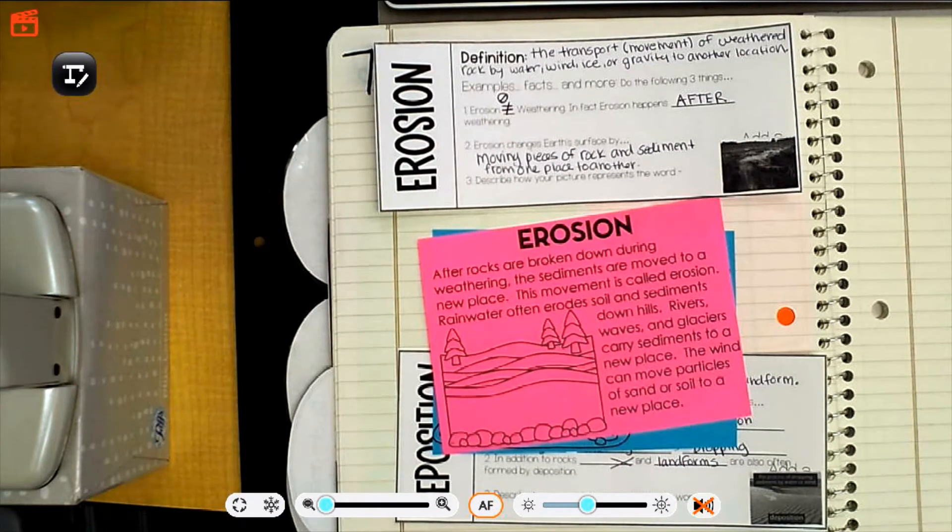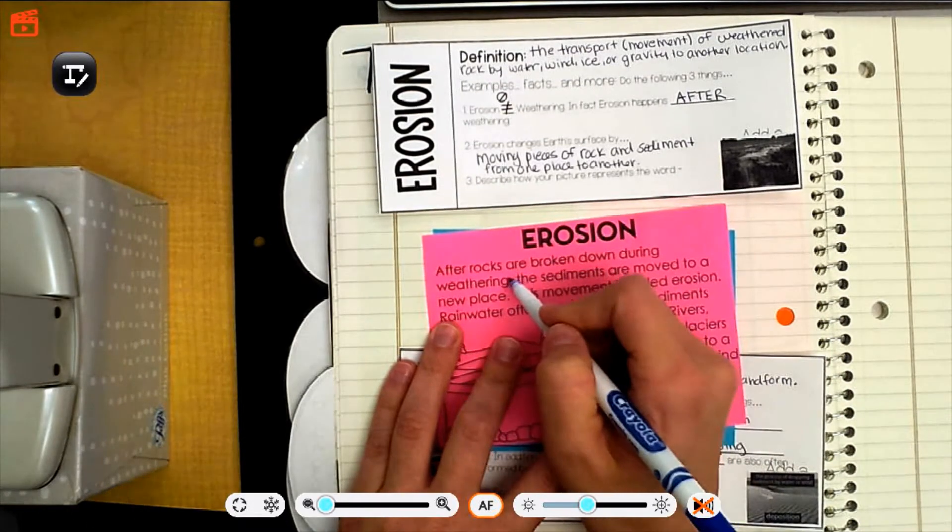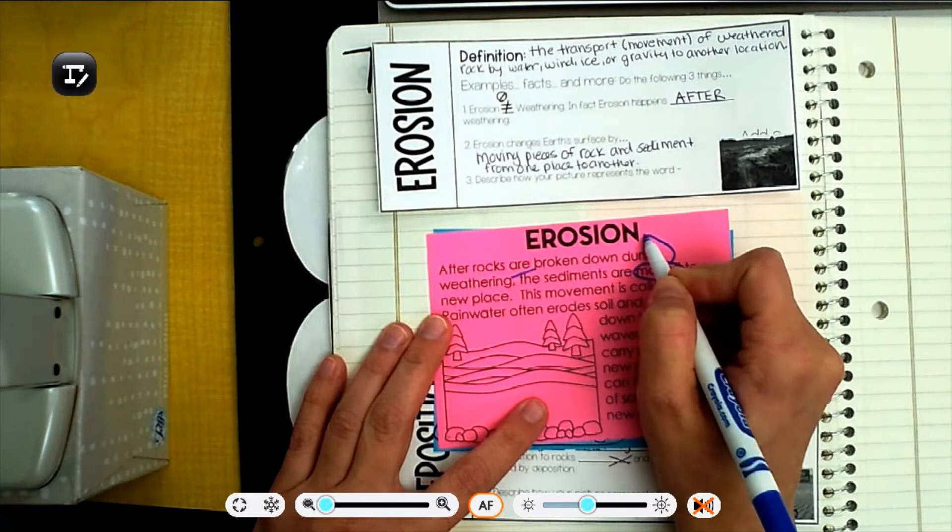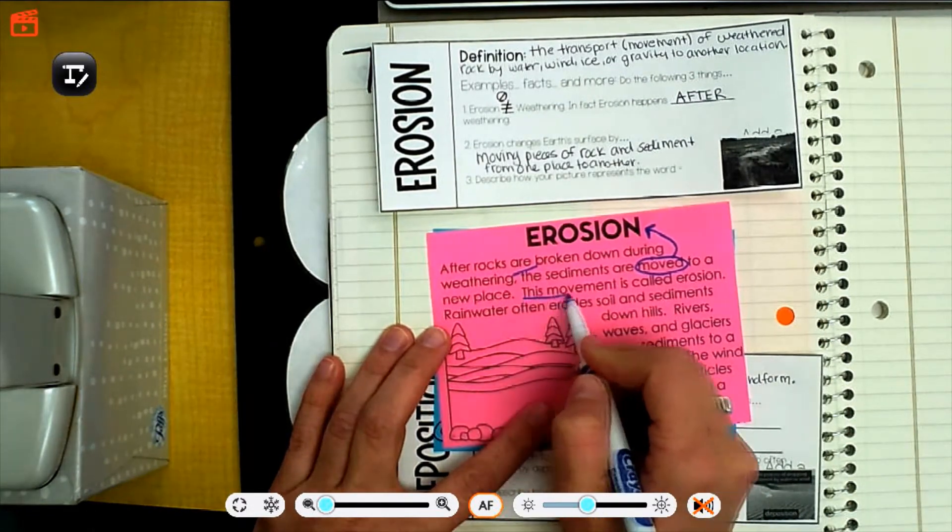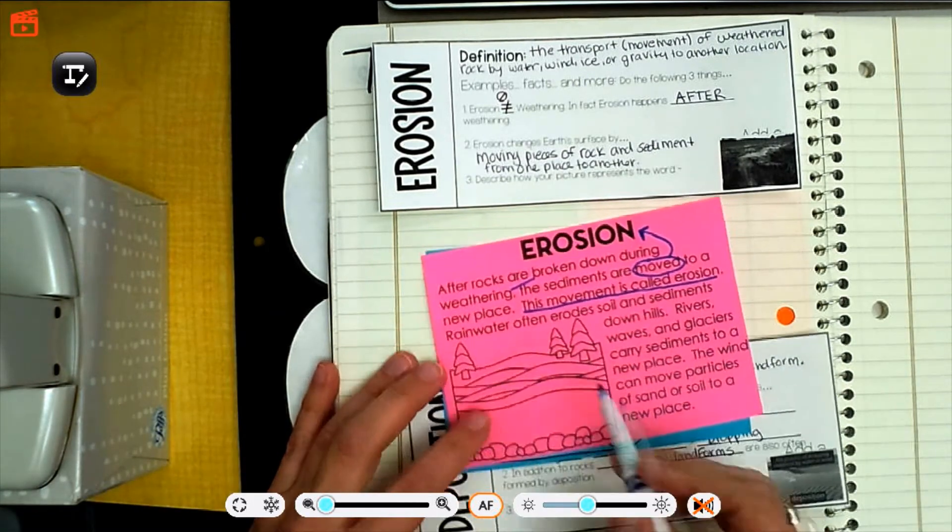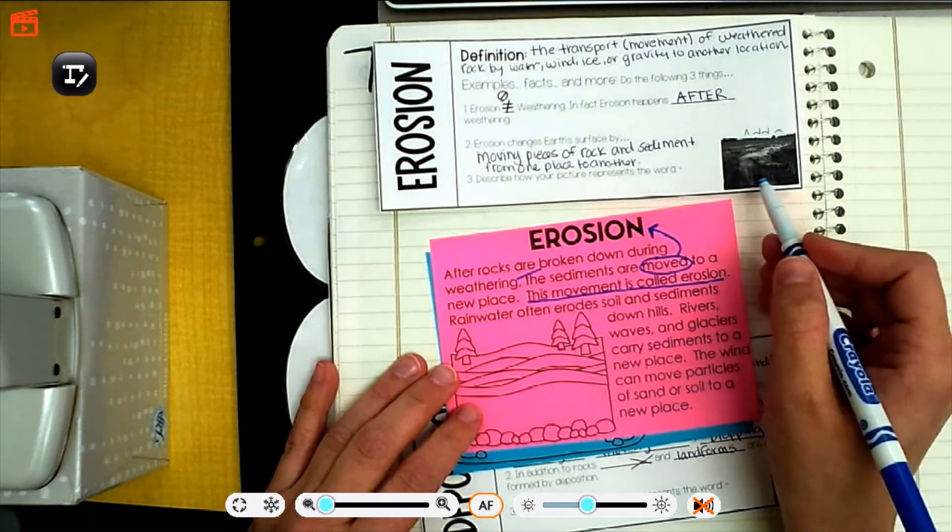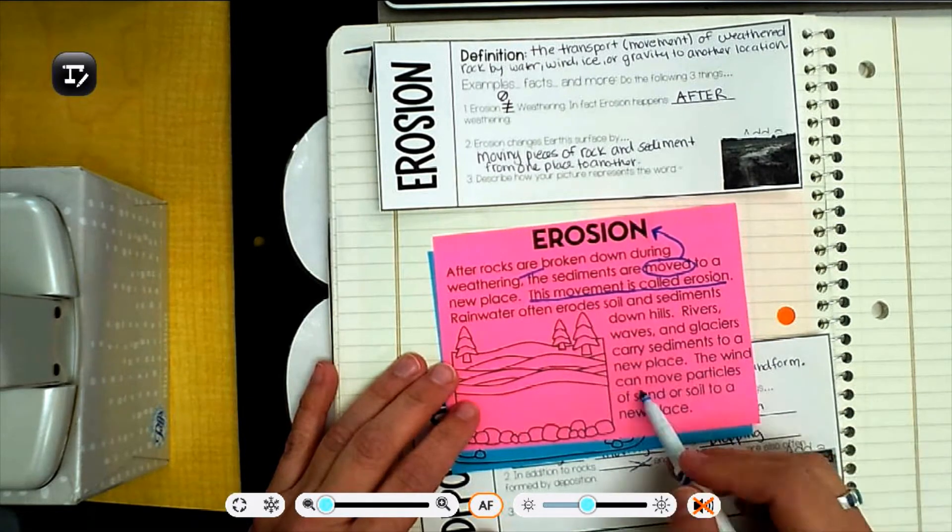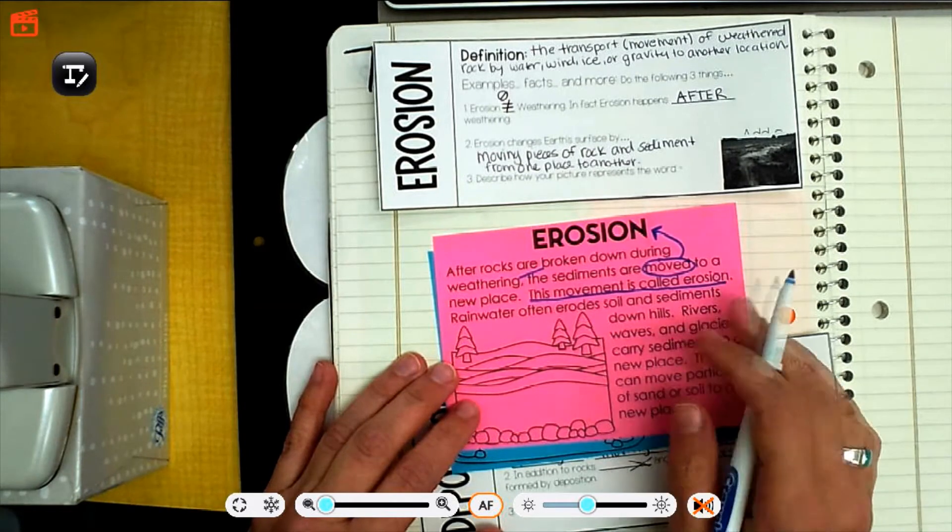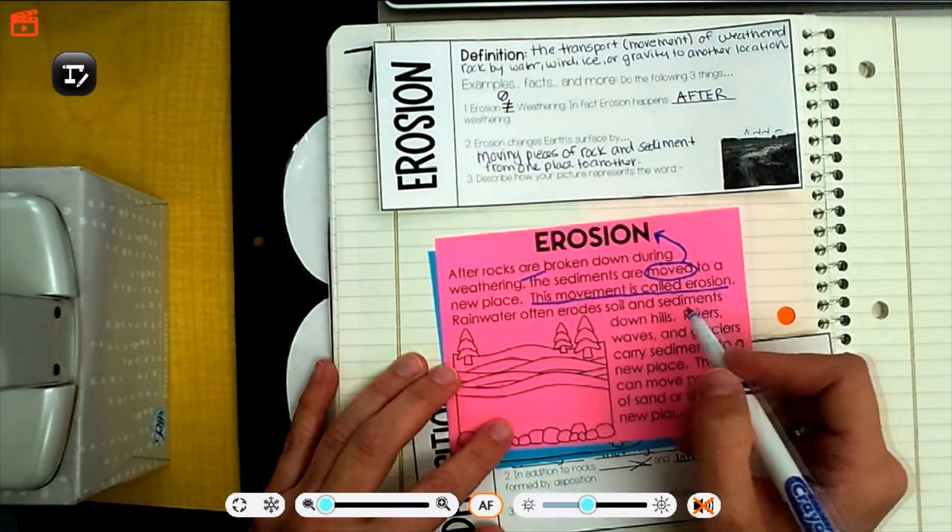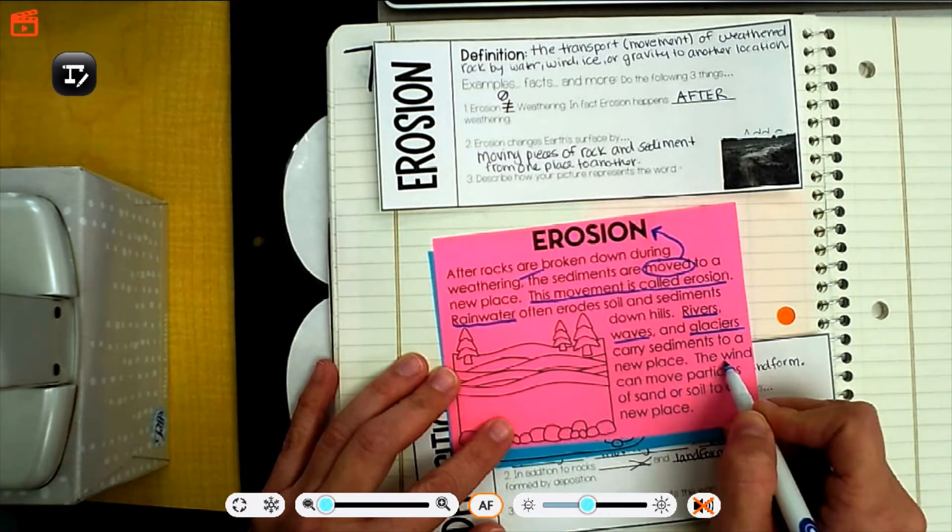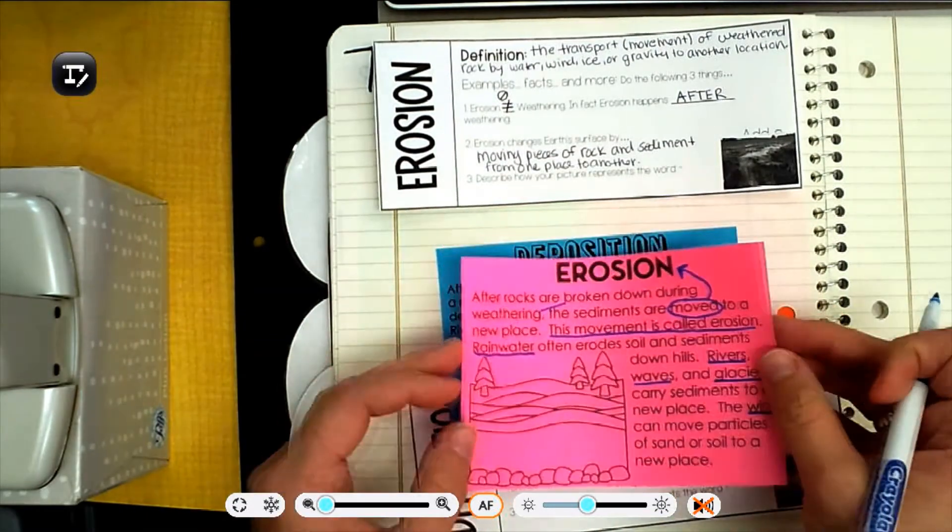So after rocks are eroded, after rocks are broken down, after they're weathered, remember, broken weathering. The sediments are moved. The movement is erosion to a new place. This movement is called erosion. Erosion, movement. Rainwater often erodes soil and sediments down hills. That's kind of like that picture. Rivers, waves, and glaciers carry sediments into a new place. The wind can move particles of sand or soil to a new place. So think about it. We've got things that can erode. Rainwater, rivers, waves, glaciers, wind. All things that can move sediment.